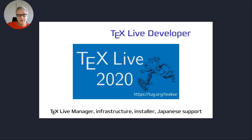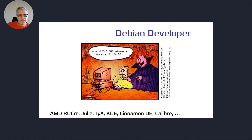In my spare time and open source activity, I'm the main developer of TeX Live — the big TeX typesetting system developed by Don Knuth. I wrote the TeX Live manager and the whole infrastructure, doing a lot for Japanese support since I live in Japan. I'm also a TVM developer, currently responsible for quite a lot of stuff including the LLVM ROCM stack, the Julia programming language, the TeX packages, and the KDE and Cinnamon desktop environments.